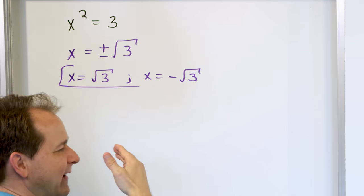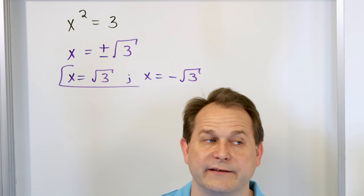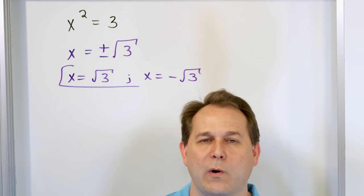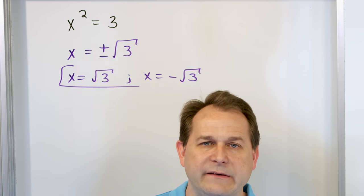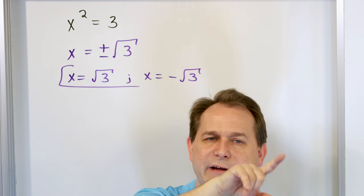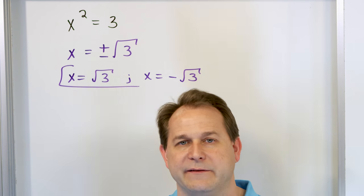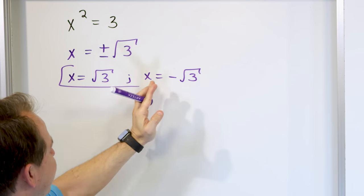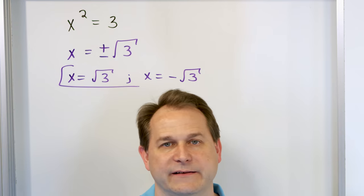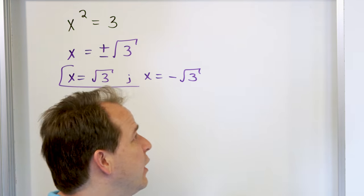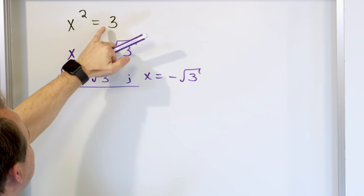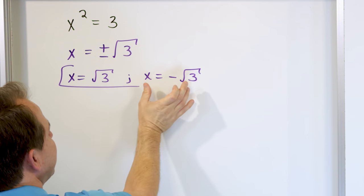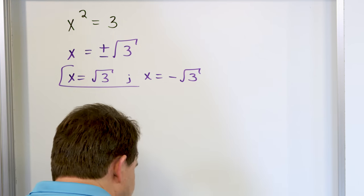What does it actually mean when you get two solutions — two roots of a quadratic like this? These quadratics all look like parabolas, either smiley faces or upside-down frowny faces. The two answers are the values where the parabola crosses the x-axis, because those are the places where the function is equal to zero. That's x equals positive square root of 3 and x equals negative square root of 3.